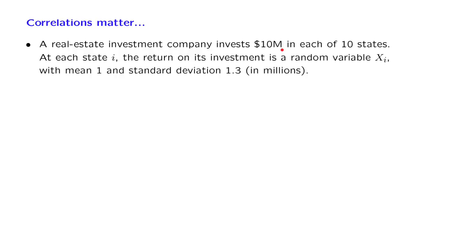For each state, you have a model that tells you that the return on your investment, that is your profit, is of course random, but you expect it to be 1 million on average, that is in terms of the expected value. But there's also a fair amount of randomness, and so the standard deviation is 1.3.